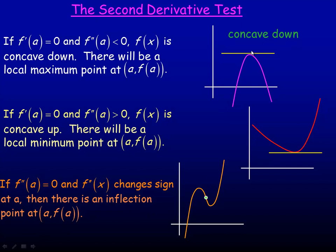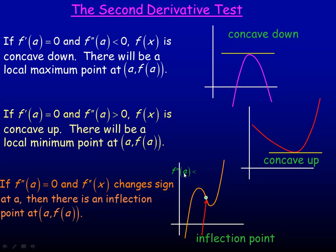Just to recap: concave down and the first derivative is zero means we have a local max point. The graph is concave up and the first derivative is zero means we have a local minimum point. And if the second derivative changes sign — in this case going from negative to positive — that point would be an inflection point, the point a comma f of a.